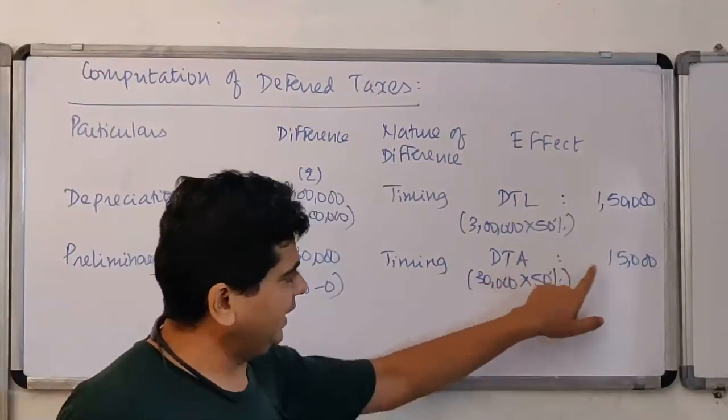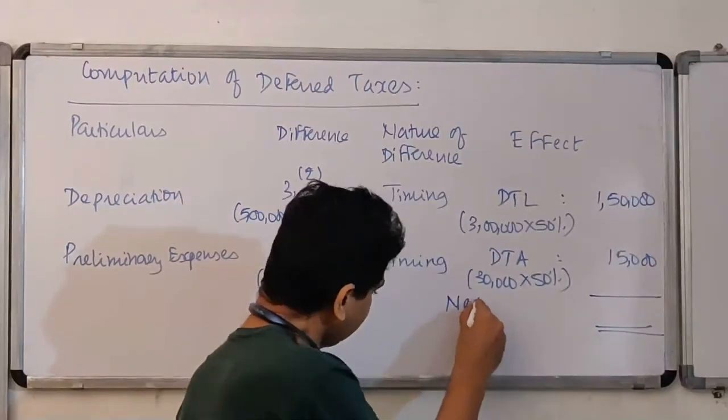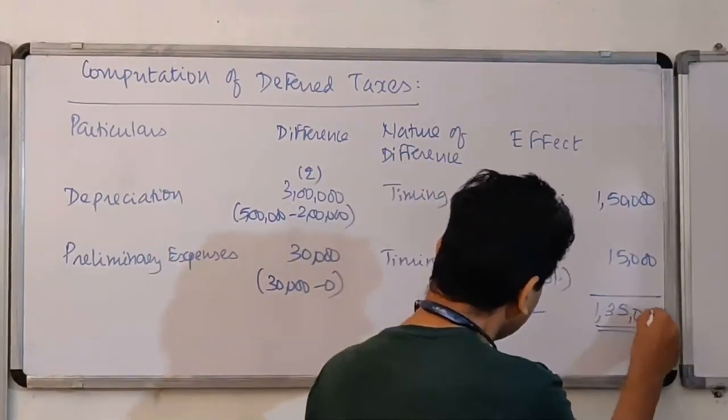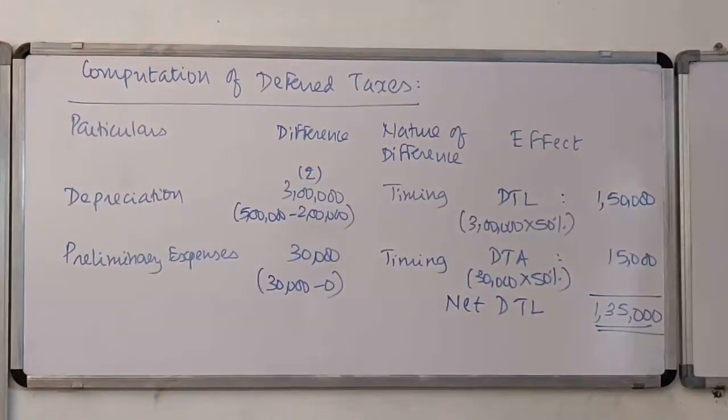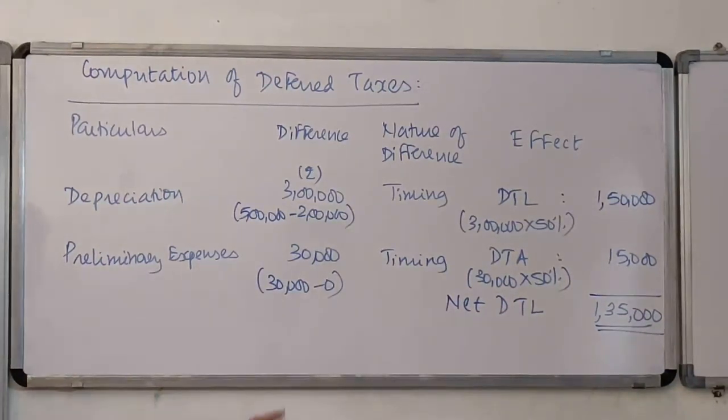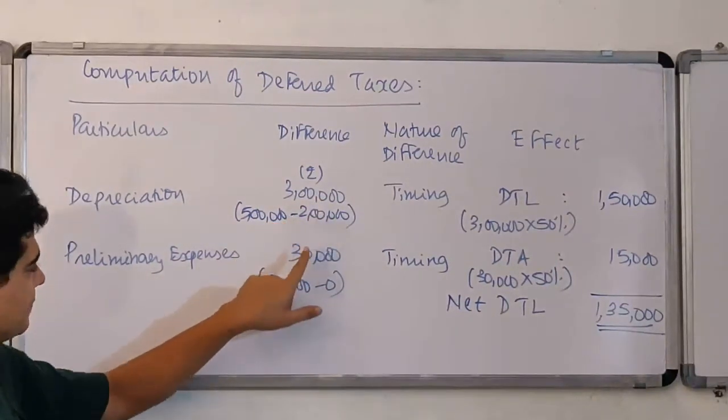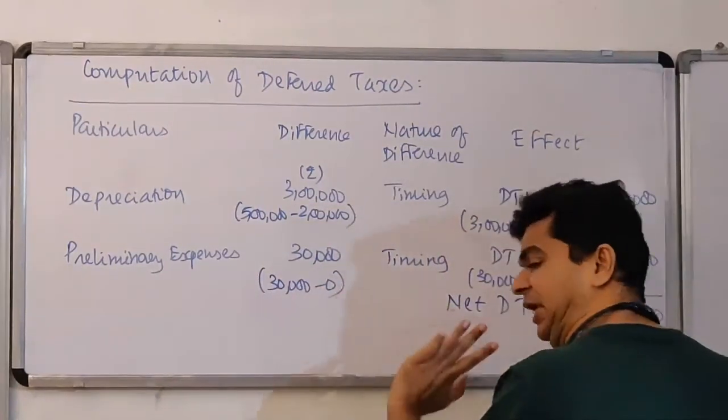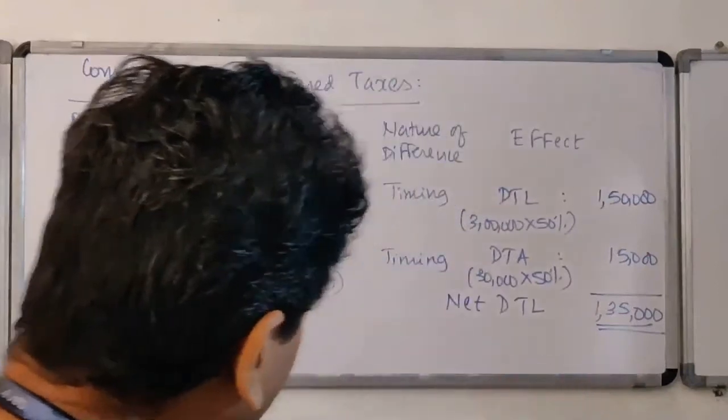DTL is there. DTL is higher. So, it is a net deferred tax liability. This is for tax. This is for account. So, I get the difference. As far as preliminary expenses is given, they are not given any figure for account, so I am taking that as zero. And on the basis of that, I am computing the deferred taxes.